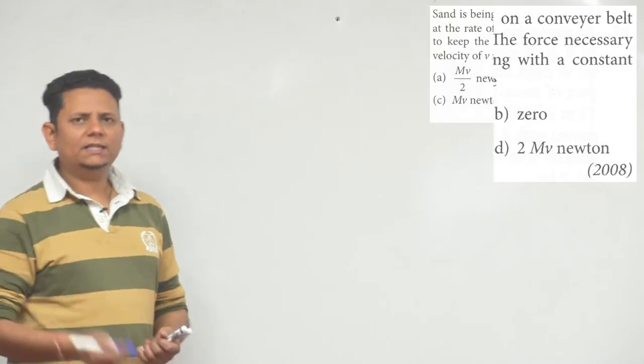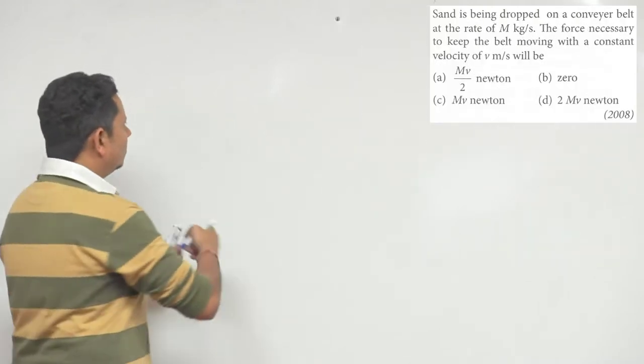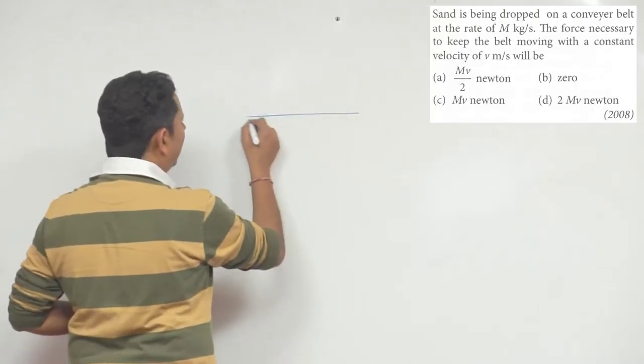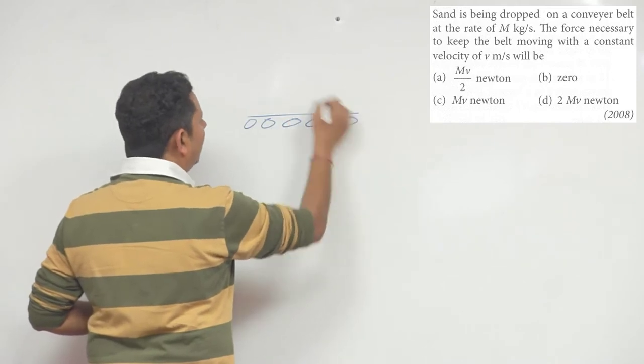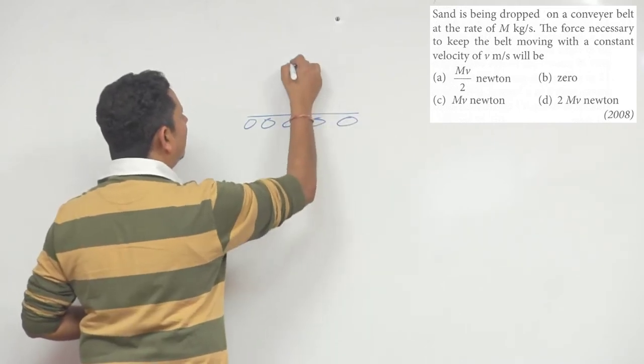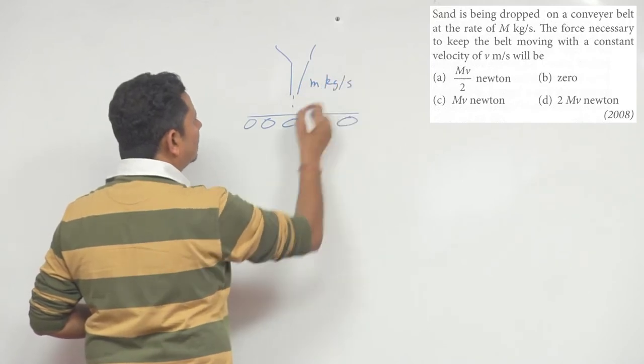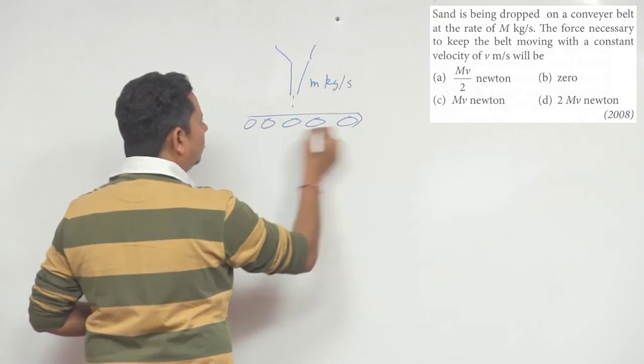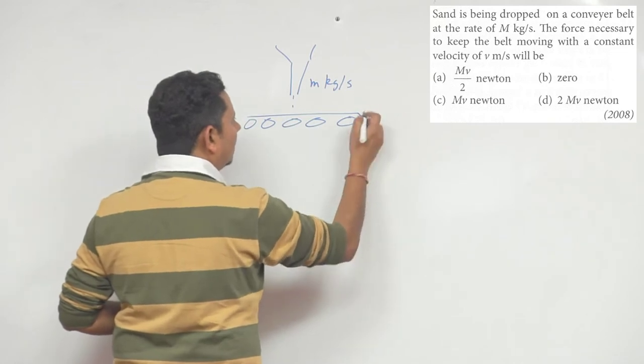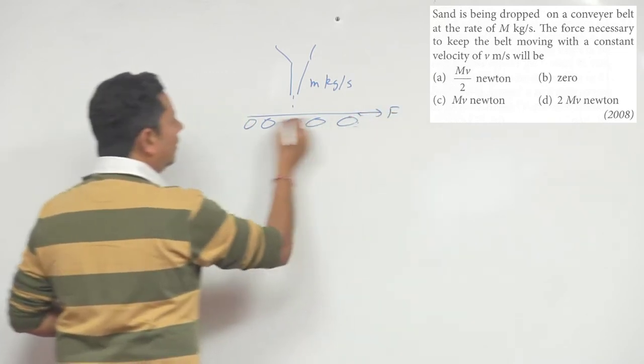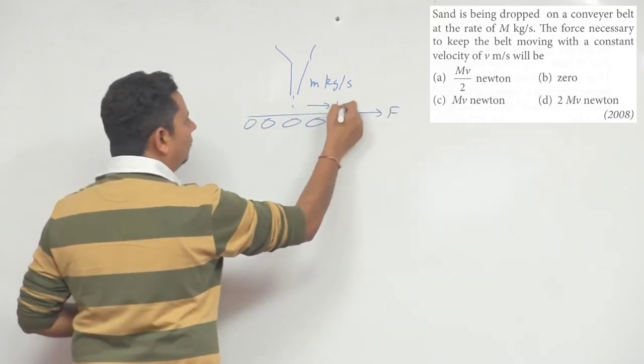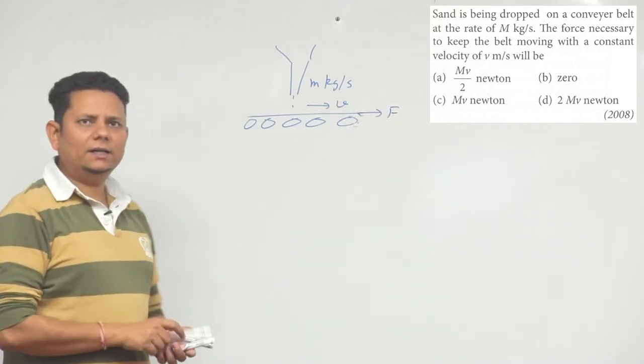This is a simple question, not much complication. So for example, here we have a conveyor belt, and on this conveyor belt sand is being poured at a rate of M kg/s. Now you want to apply a certain amount of force here so that the belt keeps moving at velocity v. So how much force do you need to apply here?